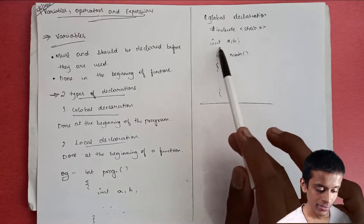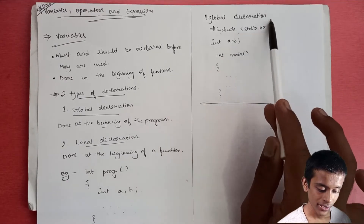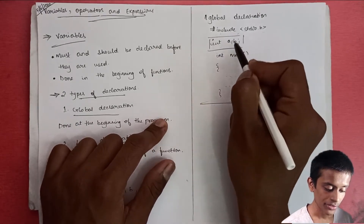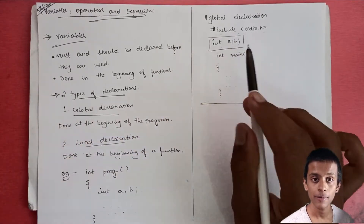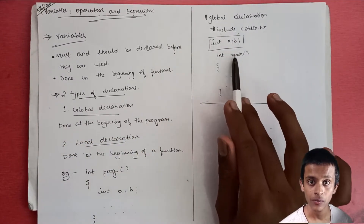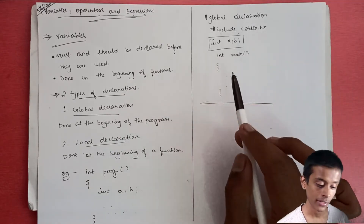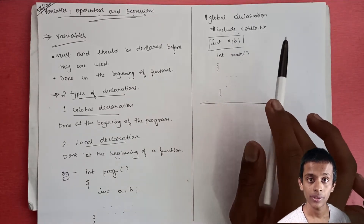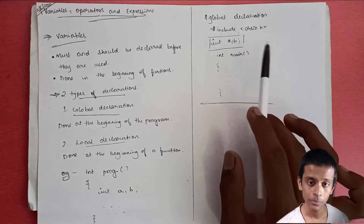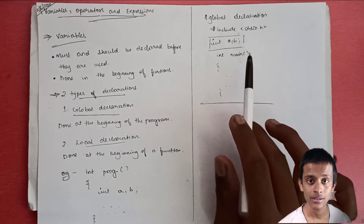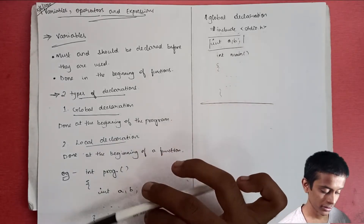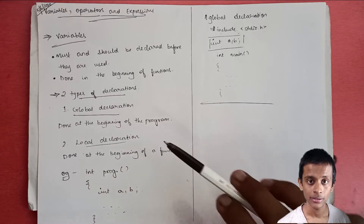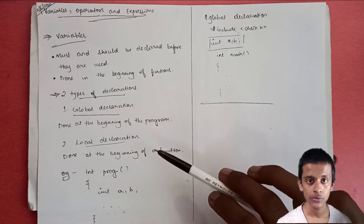What is global declaration? If you do the declaration at the start of the program after the preprocessor directive, this is known as global declaration — here a and b are variables of type integer. The declaration is done after the header file, such as stdio.h, and all other functions come after this declaration. Global declaration is not usually preferred; local declaration is the preferred type in C.